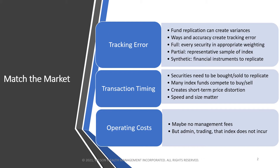One of the things with tracking error that I mentioned before is that tracking error can happen on both sides. We tend to worry about if tracking error causes us to underperform the benchmark. For example, if the S&P 500 did 10% and the way we replicated our portfolio only earns us 9.5%, then there's a negative 50 basis point tracking error.